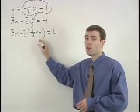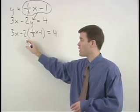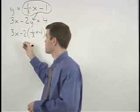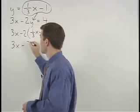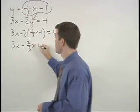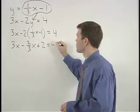Now we can solve for x by first distributing this negative 2 through the parentheses to get 3x minus two-thirds x plus 2 equals 4.